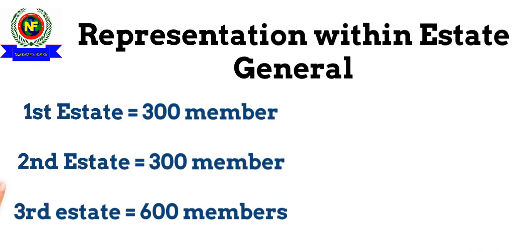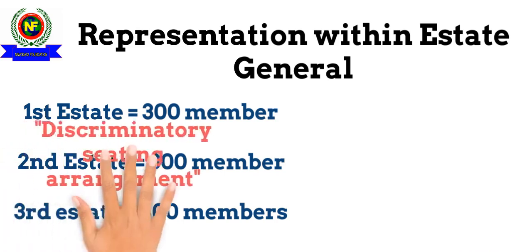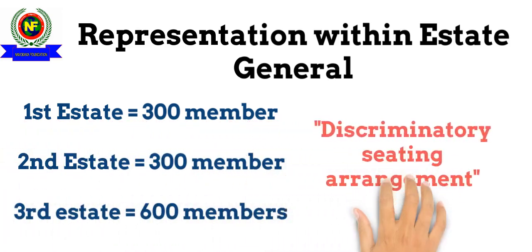Moreover, the seating arrangement was such that the first two estates had seats and were facing each other, but the third estate members had to stand. Another important point is that women, peasants, and artisans were not invited to the Estates General, and they had to convey their problems via representatives from the third estate.